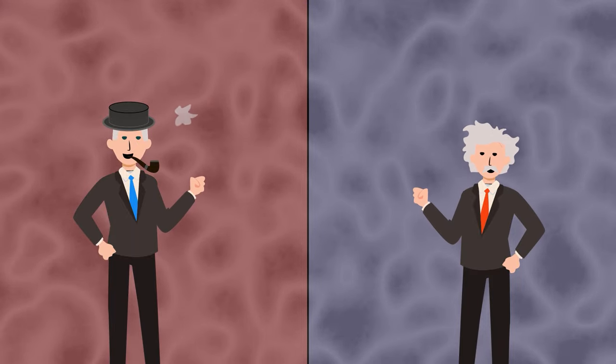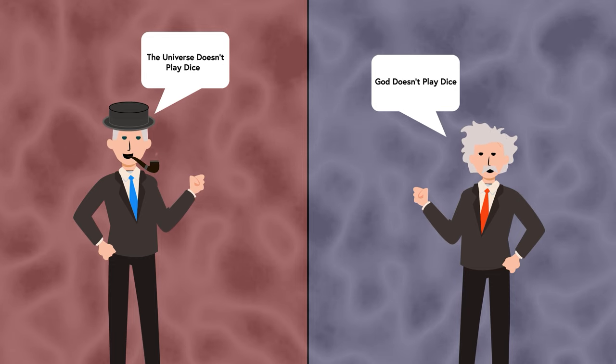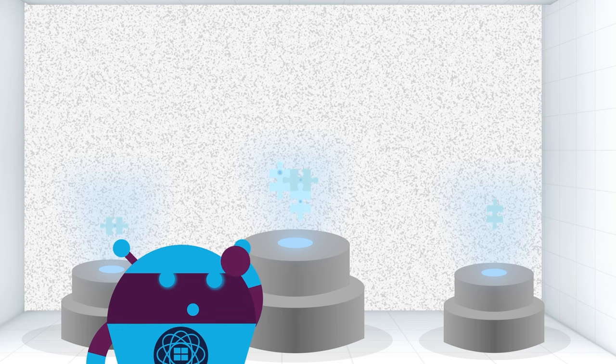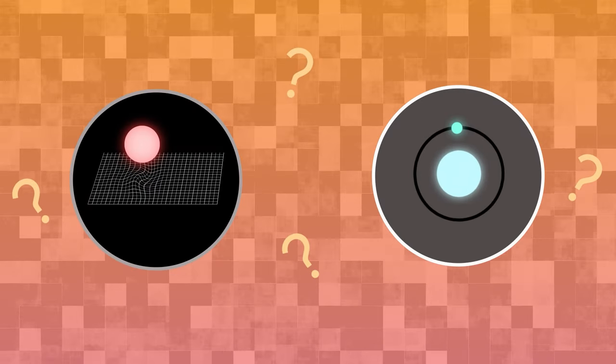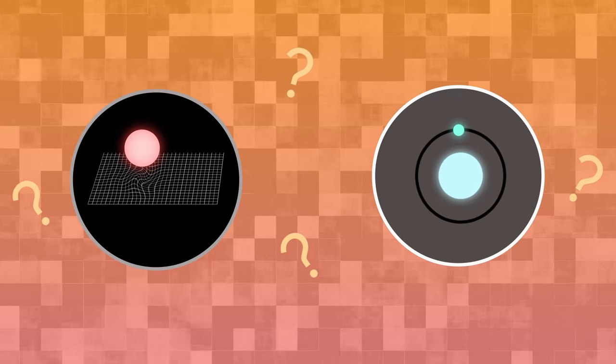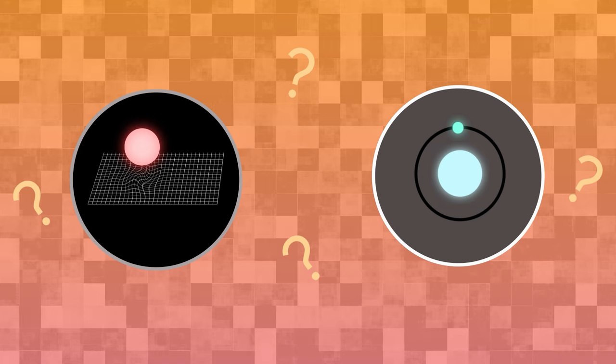In our previous video, we began to examine the clash between classical and quantum mechanics on gravity. This conflict has been intriguing us for decades and is one of the biggest barriers to completing the standard model.